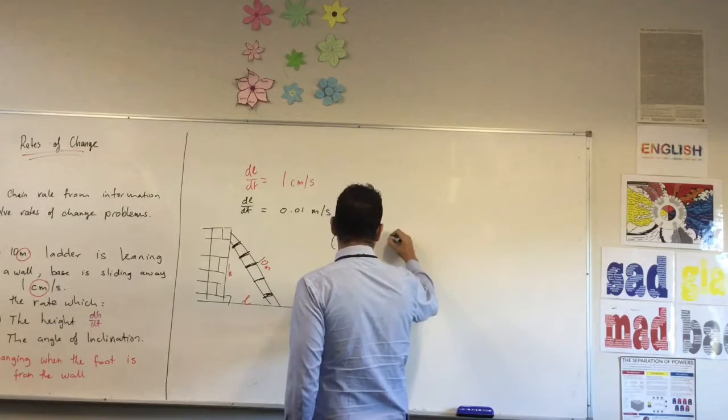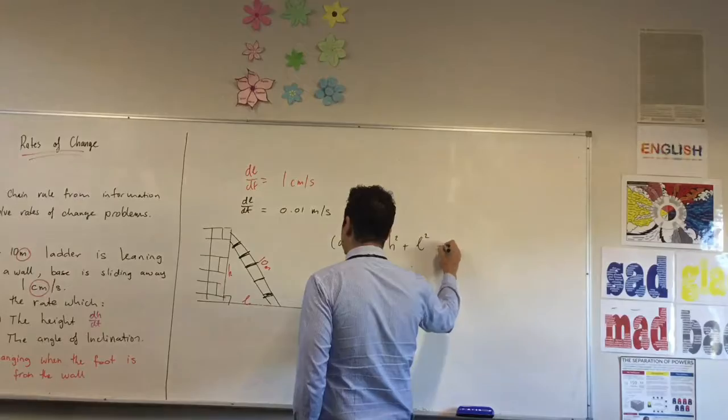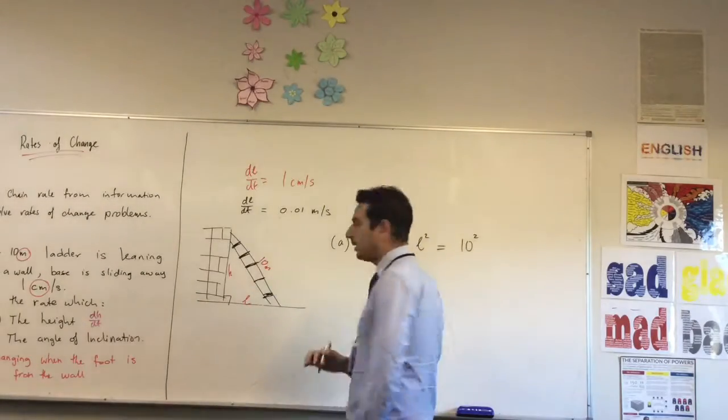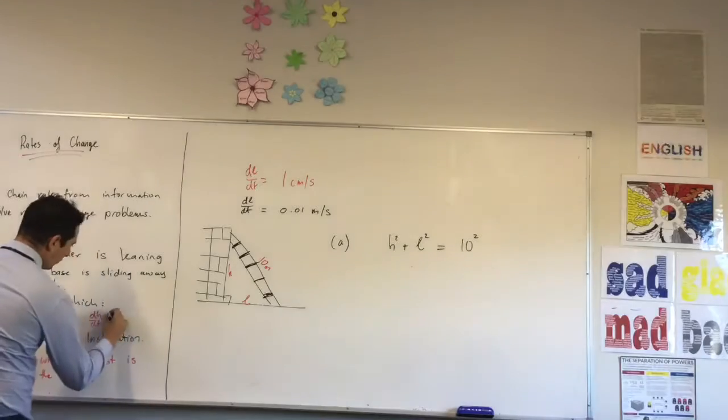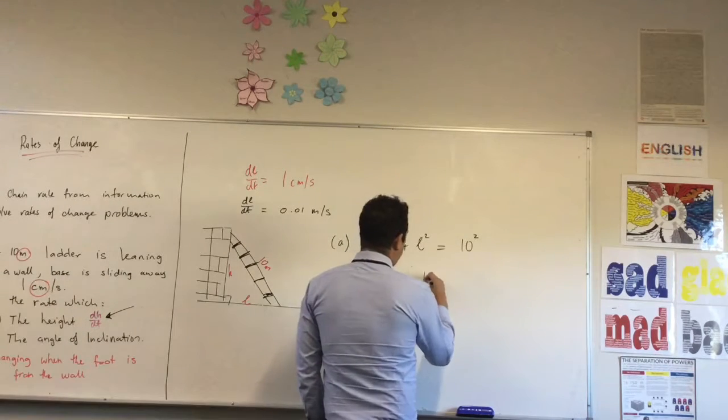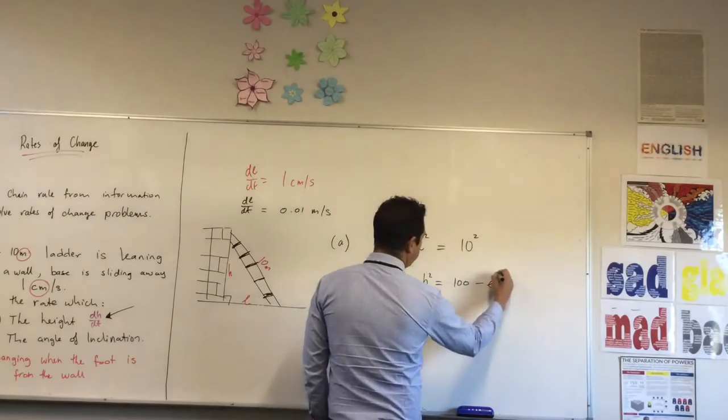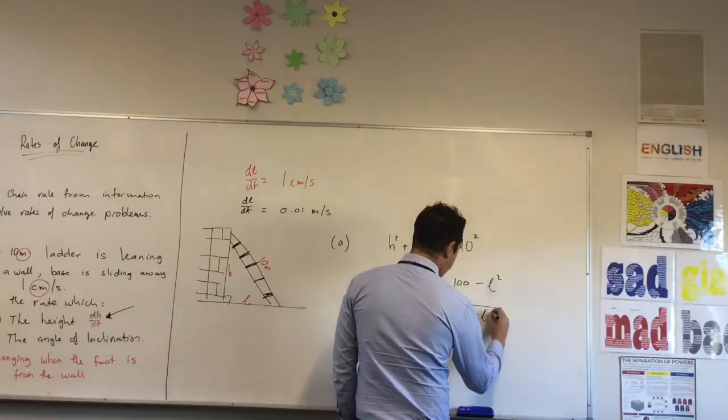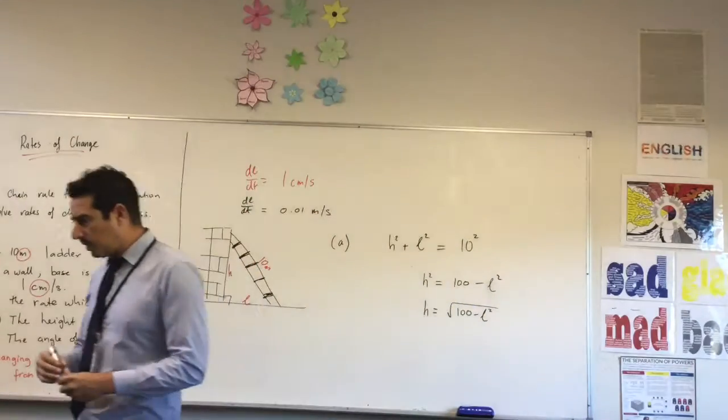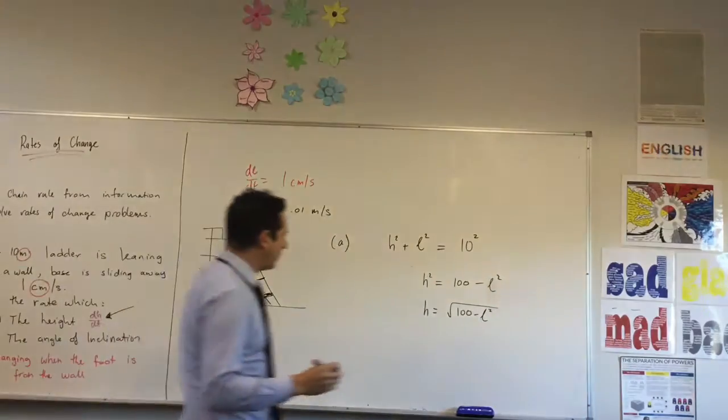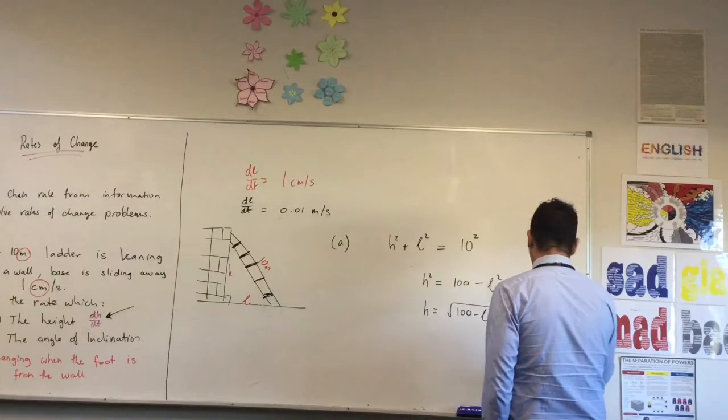So we're going to use Pythagoras. It's going to be H squared plus L squared equals 10 squared, because that's the hypotenuse squared. So we've got H squared equals 100 minus L squared, and so H equals square root of 100 minus L squared. Why haven't I written plus or minus? Because it's a distance, so there's no minus. We're going to say H has to be greater than zero.